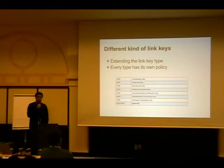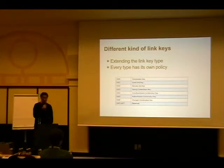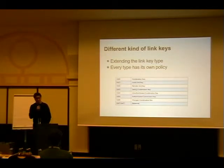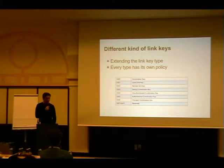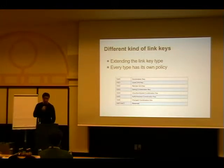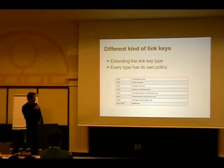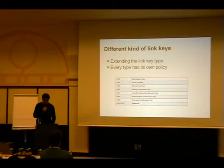All these link keys have different implications on when you have to drop them, when you can use them, and what you can do with them. The debug combination key should only stay in memory. The unauthenticated combination key needs to be updated once you need a higher security level — you can store it but shouldn't, since you can always regenerate it as it requires no user interaction. The authenticated combination key is one you want to keep, otherwise you'd have to redo passkey entry. The change combination key is for when you don't know where the change came from.